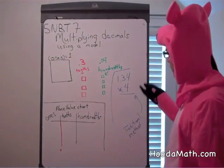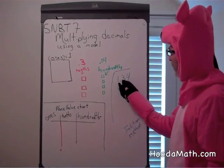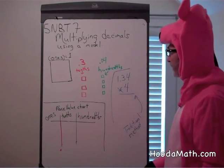Okay, we're going to multiply 4 times 1 and 34 hundredths.